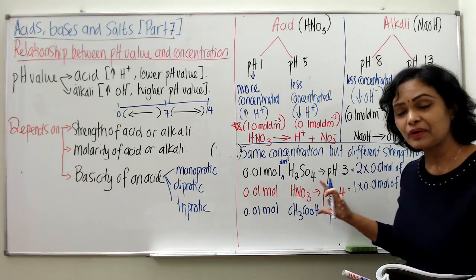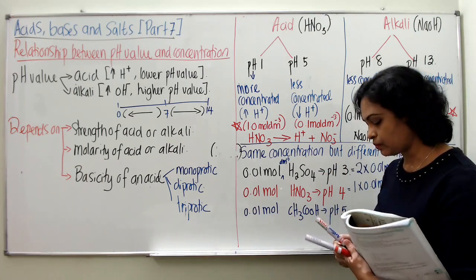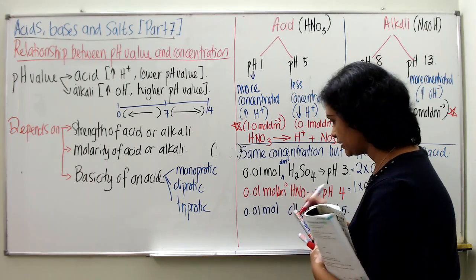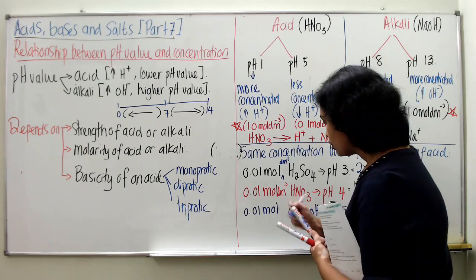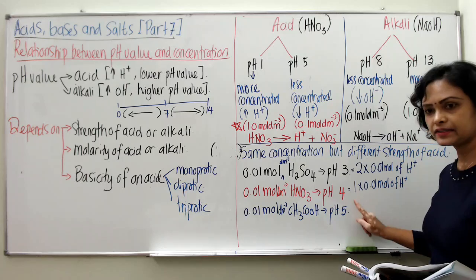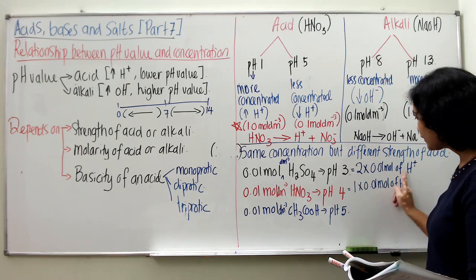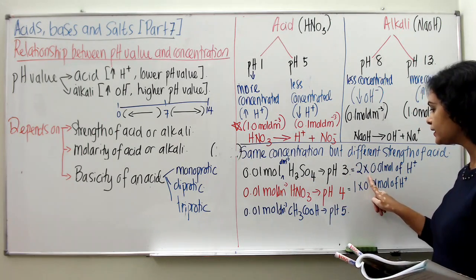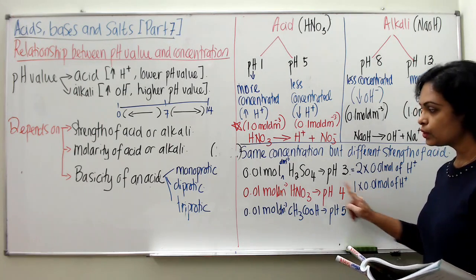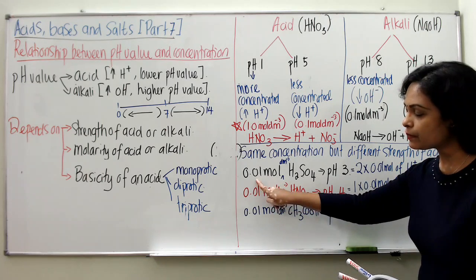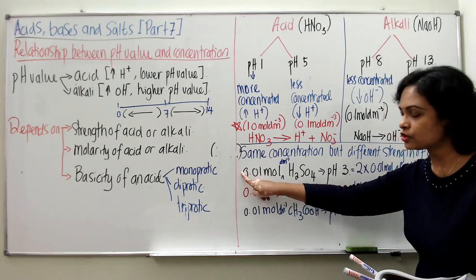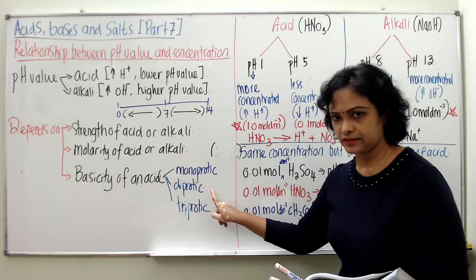So that is the reason why the pH value differs — not the concentration. The amount of hydrogen ion for sulfuric acid is higher compared to nitric acid, even though both have the same molarity. Teacher is trying to explain basicity of the acid with two examples.